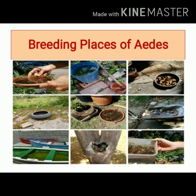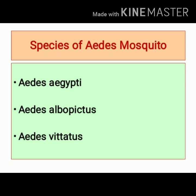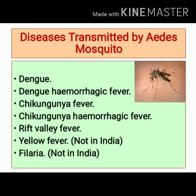Aedes prefers to breed in stored water or collected water. Important species of Aedes Mosquito include Aedes aegypti, Aedes albopictus, and Aedes vitatus. Out of these, Aedes aegypti is the most important vector and is the first proven vector of yellow fever. As per international health regulations guidelines, the Aedes aegypti index is kept at 0 at all international airports and seaports.